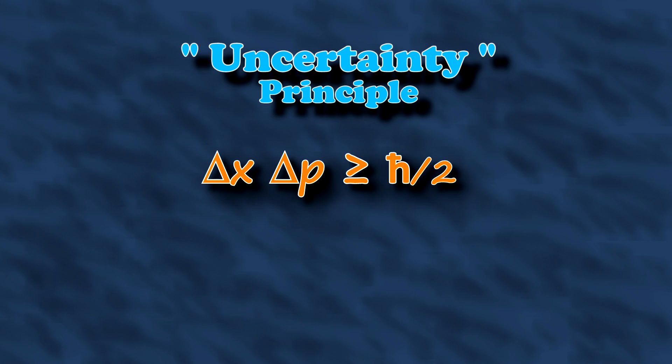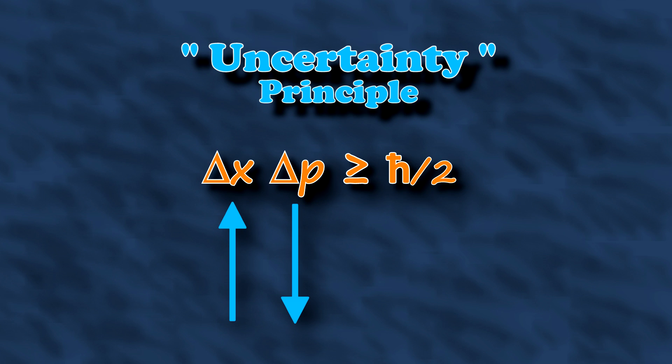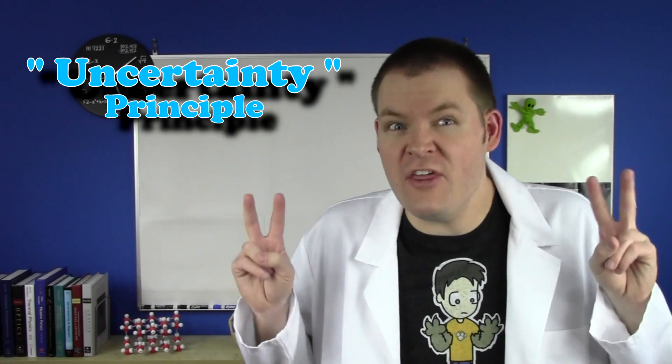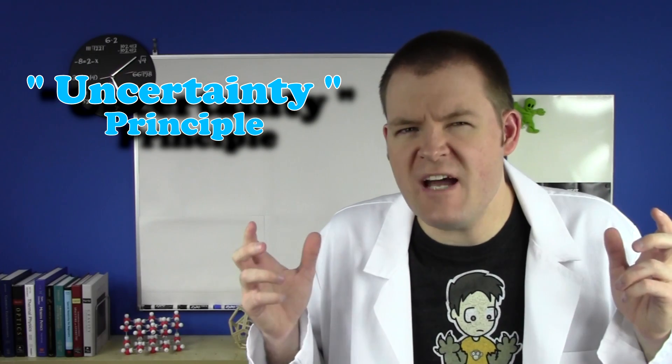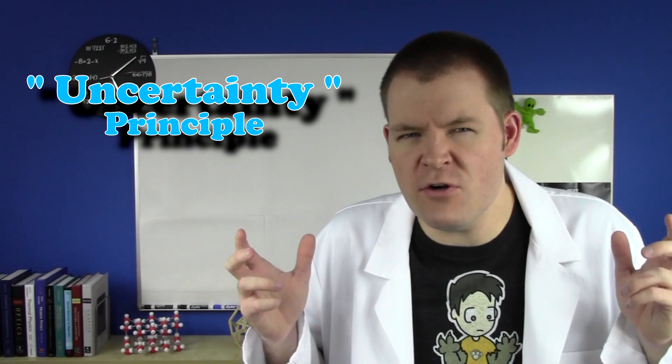What you normally hear is something like this: the more you know about where a particle is, the less you know about what it's doing. This implies that somehow the technology we're using to make measurements is at fault. Nonsense! It shouldn't even be called the Uncertainty Principle, because it's not really about uncertainty.